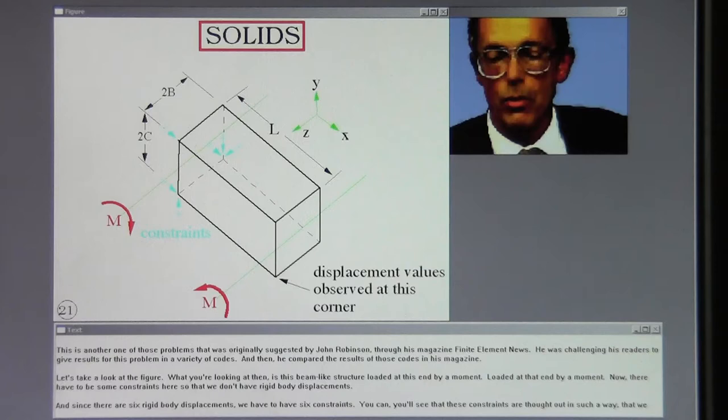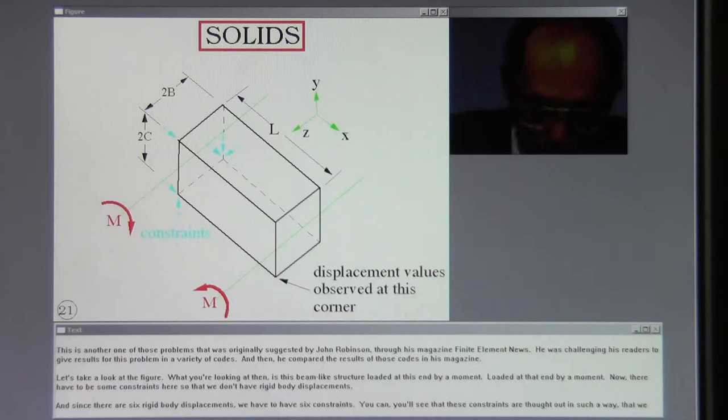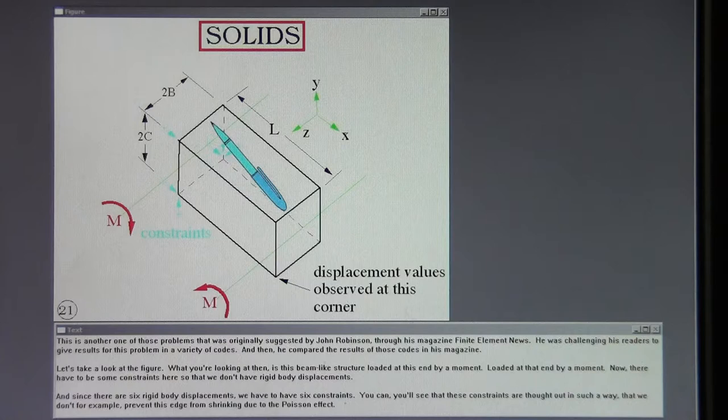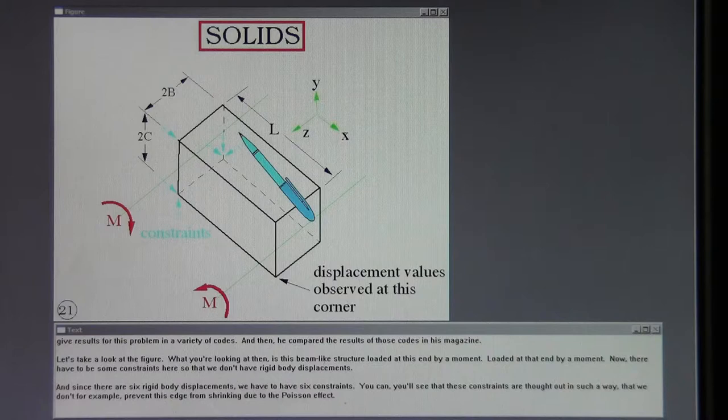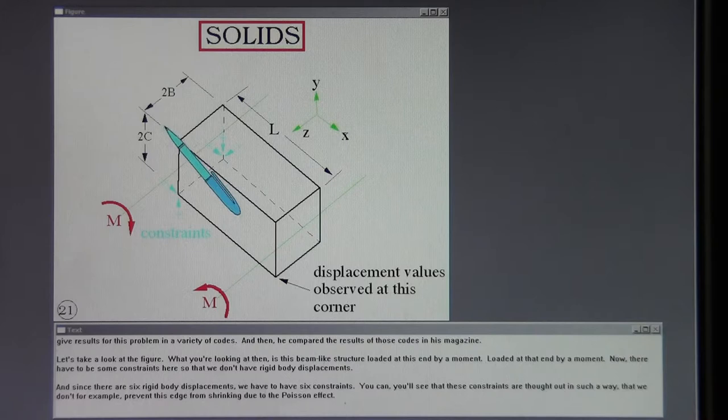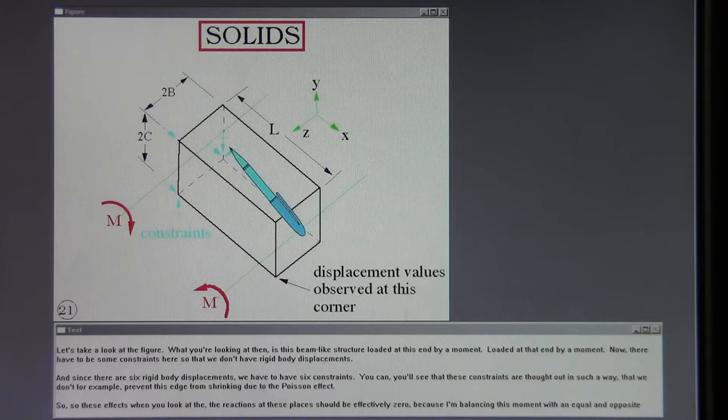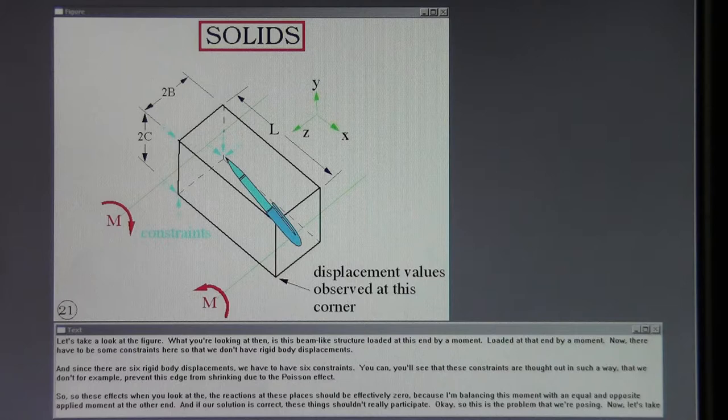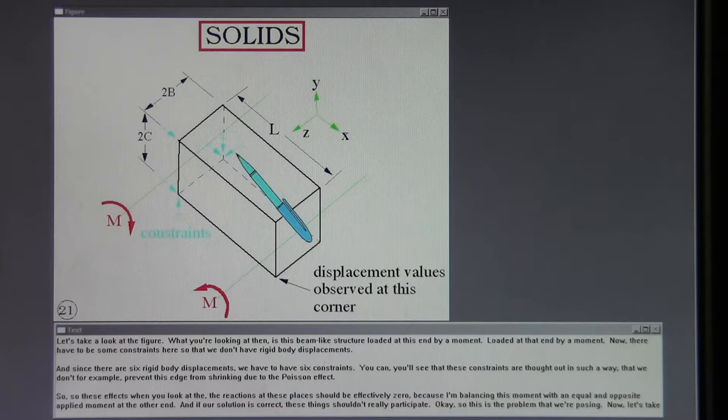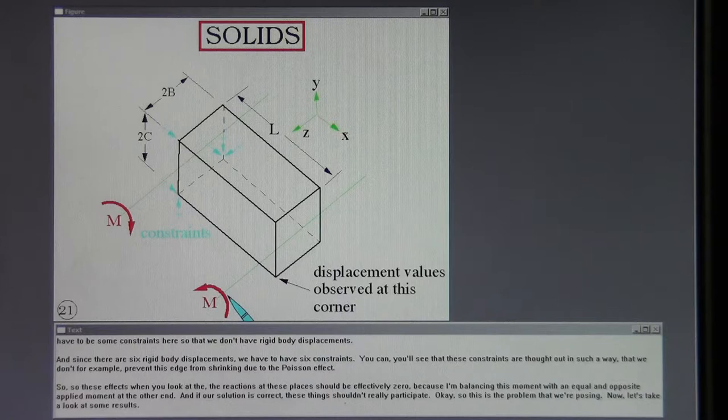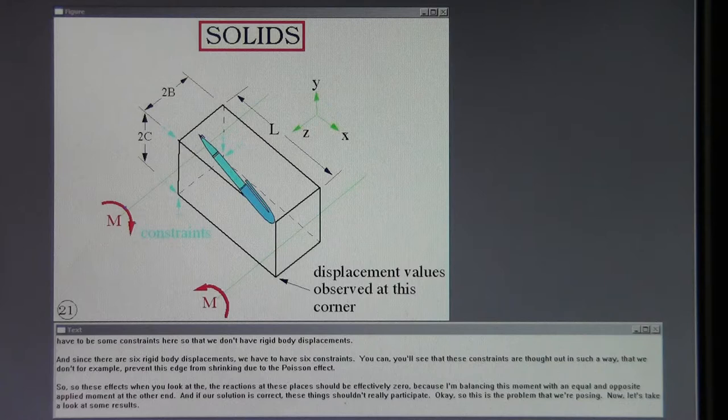Let's take a look at the figure. What you're looking at then is this beam-like structure loaded at this end by a moment, loaded at that end by a moment. Now there have to be some constraints here so that we don't have rigid body displacements and since there are six rigid body displacements we have to have six constraints. You'll see that these constraints are thought out in such a way that we don't, for example, prevent this edge from shrinking due to the Poisson effect. So these effects, when you look at the reactions at these places, should be effectively zero because I'm balancing this moment with an equal and opposite applied moment at the other end. If our solution is correct, these things shouldn't really participate. Okay, so this is the problem that we're posing. Now let's take a look at some results.